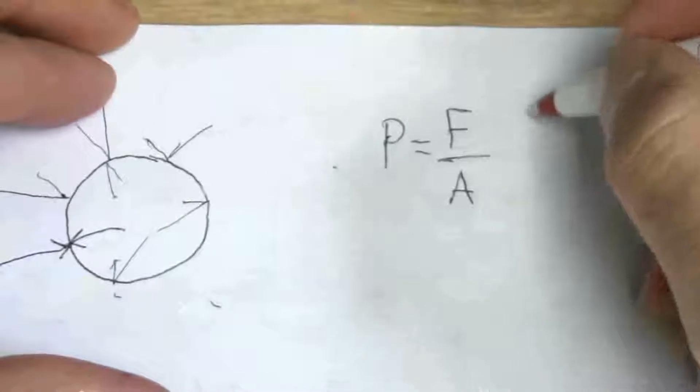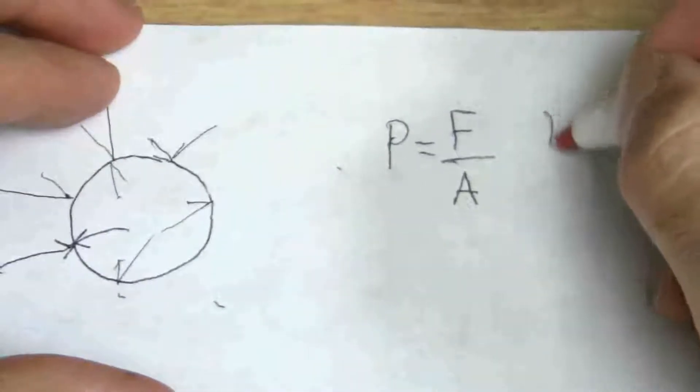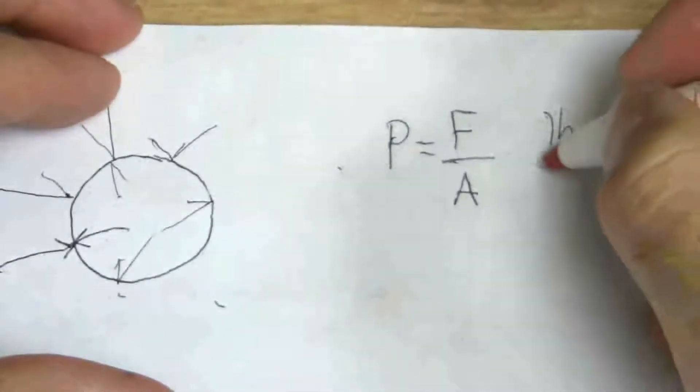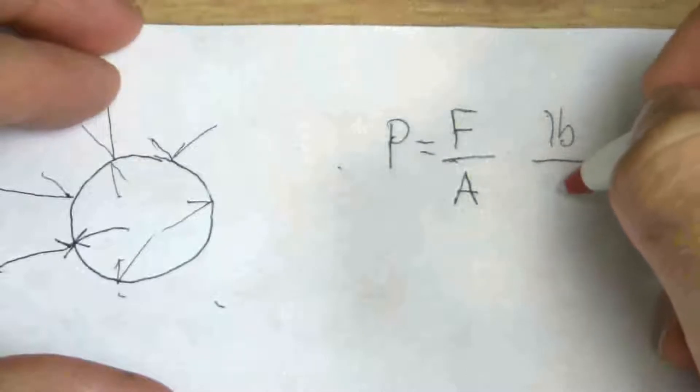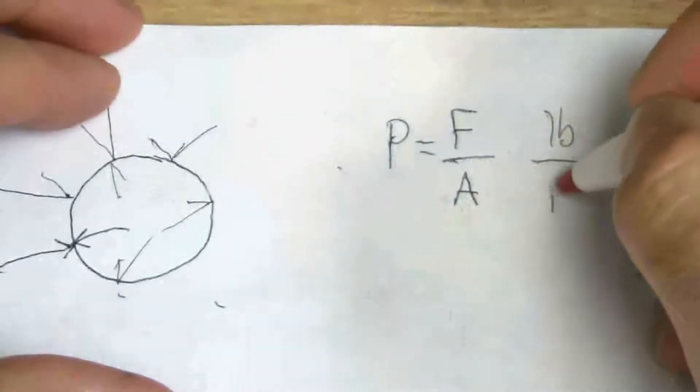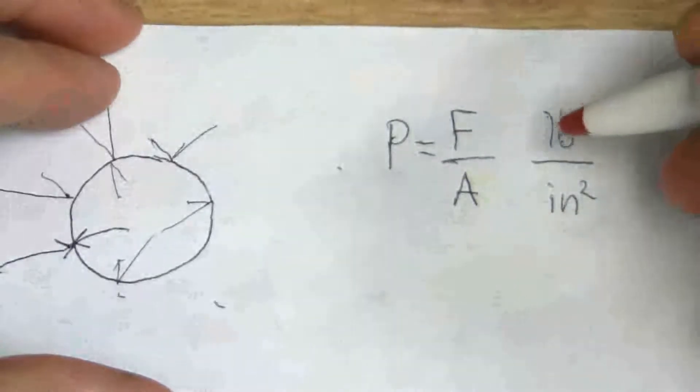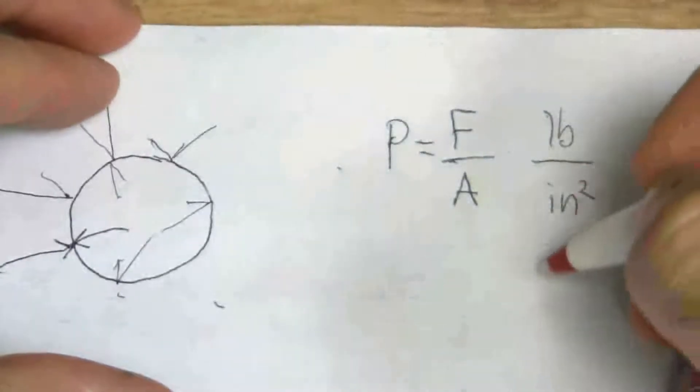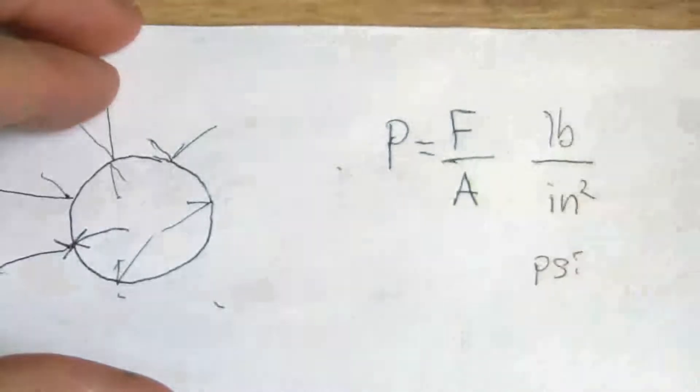And we're familiar with units of, at least in America, pounds per units of area are square inches. Pounds per square inch or PSI.